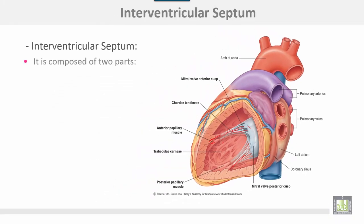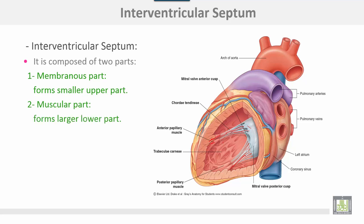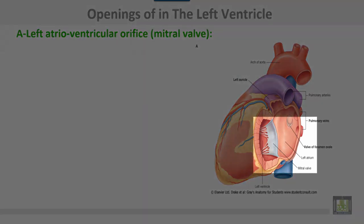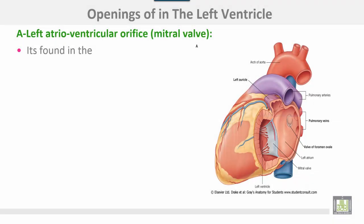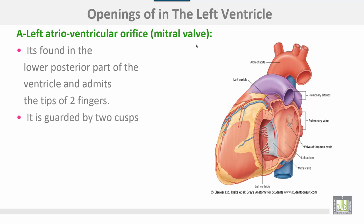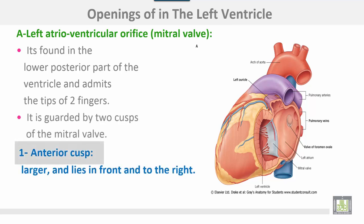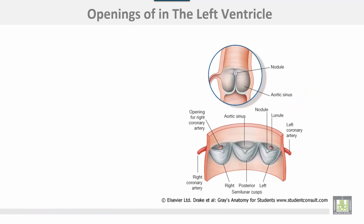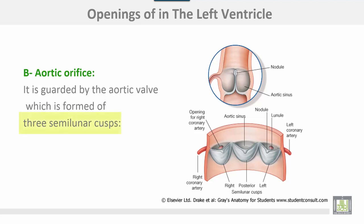The interventricular septum is composed of two parts: a membranous part forming the smaller upper portion, and a muscular part forming the larger lower portion. Openings in the left ventricle include the left atrioventricular orifice or mitral valve, found in the lower posterior part of the ventricle, which admits the tips of two fingers only and is guarded by two cusps — the anterior cusp, which is larger and lies in front and to the right, and the posterior cusp, which is smaller and lies behind and to the left. The aortic orifice is guarded by the aortic valve, formed of three semilunar cusps: one anterior cusp and two posterior cusps.